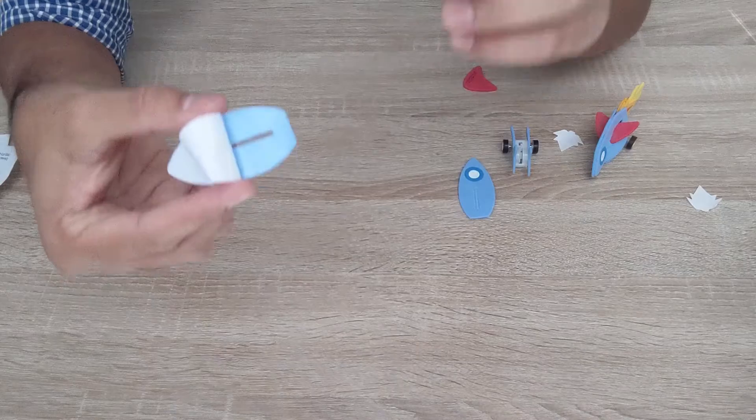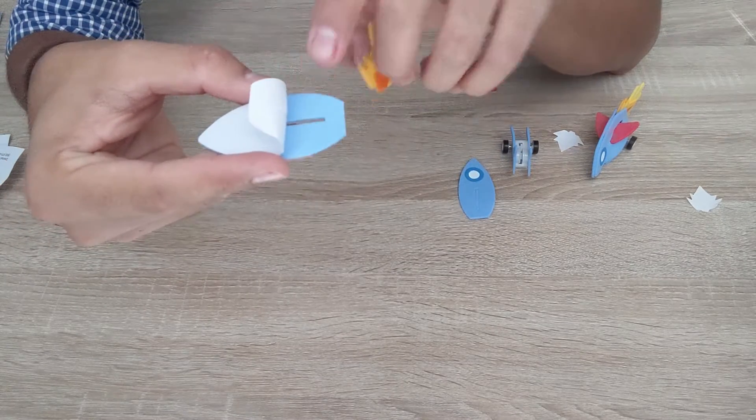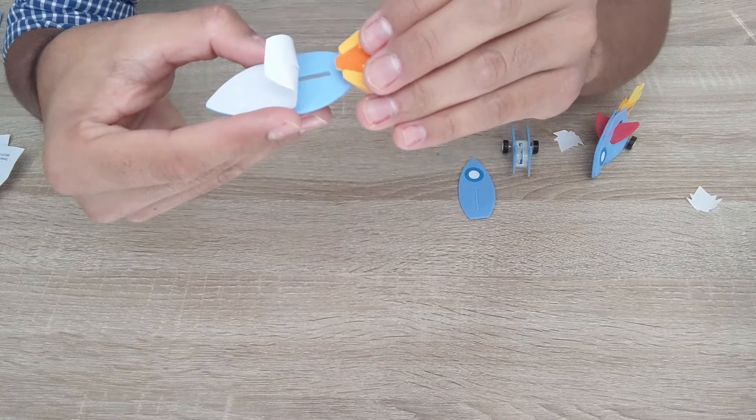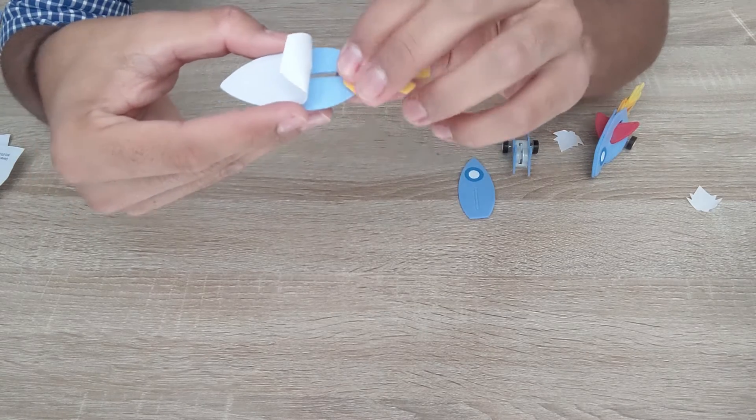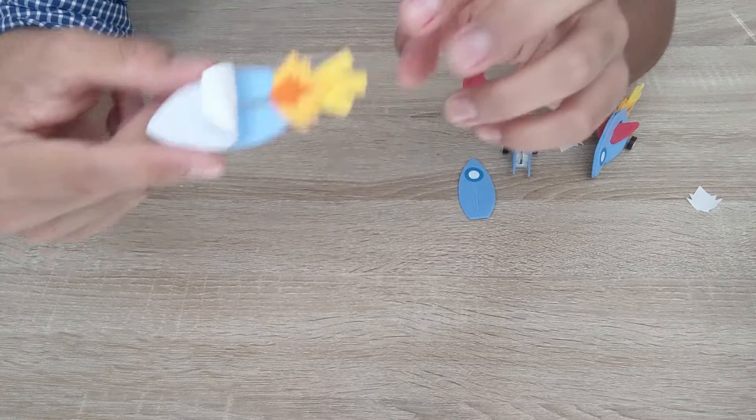Now you're going to go ahead and put it on one side of the rocket. So you want to make sure that you don't cover up this little cutaway right here. So get it as close as you can, because the more it sticks to, the stronger it'll be. But don't cover that spot up, just like that.